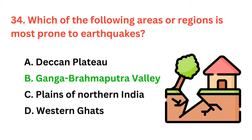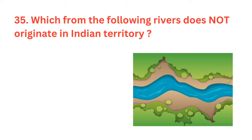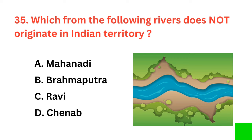Which of the following rivers does not originate in Indian territory? The correct answer is option B: Brahmaputra.